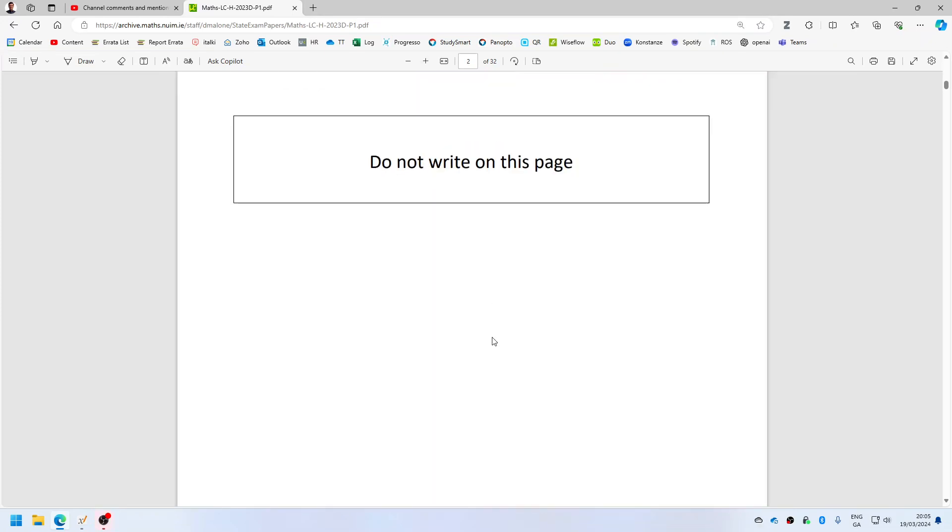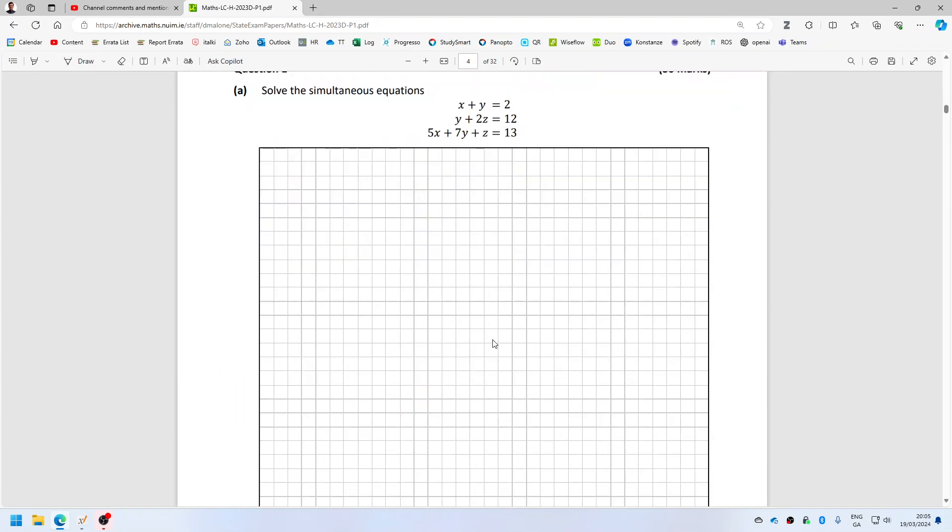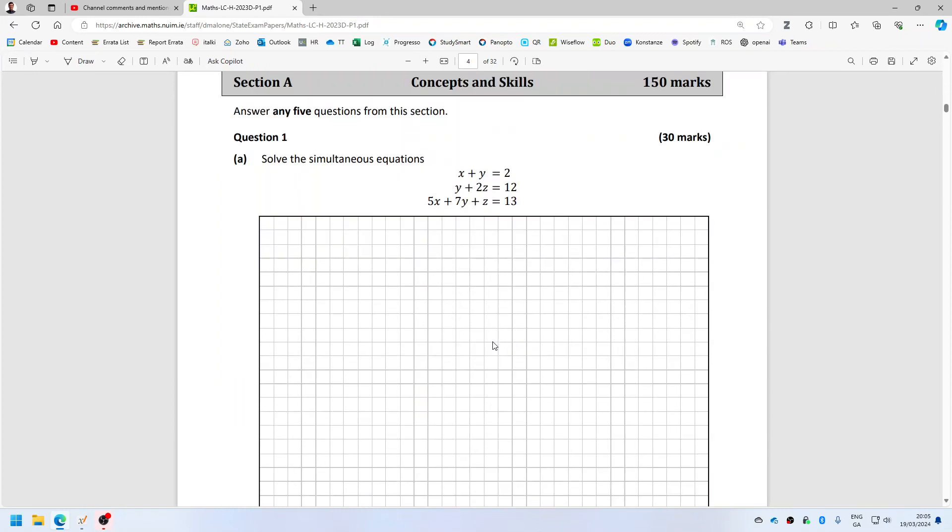Alright, let's have a look at this deferred paper. I'm certainly not going to do it all tonight, but at least I can get a start on it. Okay, so question one here: solve the simultaneous equation. What variable is in common to all three lines? Not x, potentially y. I'll say it has to be y.